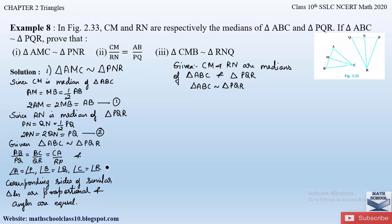Now to prove triangle AMC is similar to triangle PNR, we note the relevant sides are CA and PR, and AB and PQ. So we take the ratios AB/PQ = CA/RP from equation 3. We now substitute the values of AB and PQ from equations 1 and 2: AB = 2·AM and PQ = 2·PN.